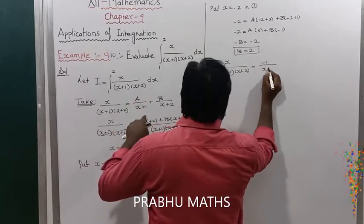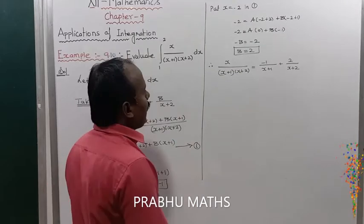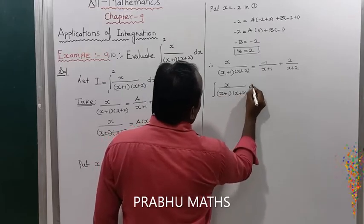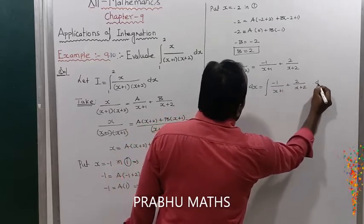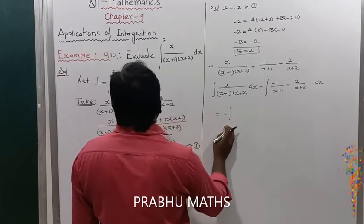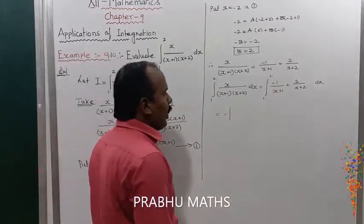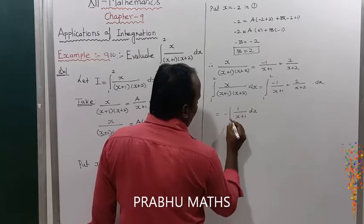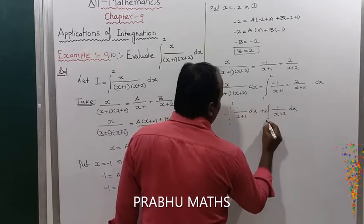Taking the integral on both sides, the integral from 1 to 2 of x/((x+1)(x+2)) dx equals the integral from 1 to 2 of [-1/(x+1) + 2/(x+2)] dx. Taking -1 as common outside, we integrate 1/(x+1) from 1 to 2, plus the integral of 2·(1/(x+2)) from 1 to 2.